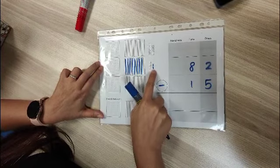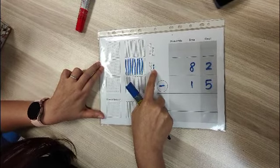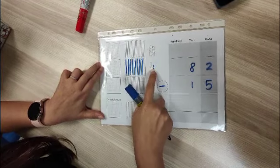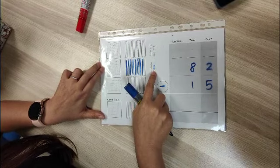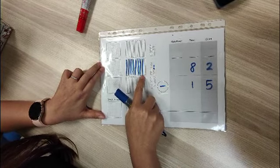Looking at these ones here, it is not enough. I would need more than 2 in order to minus 5. So to do that, I would need to rename one of the 10s.